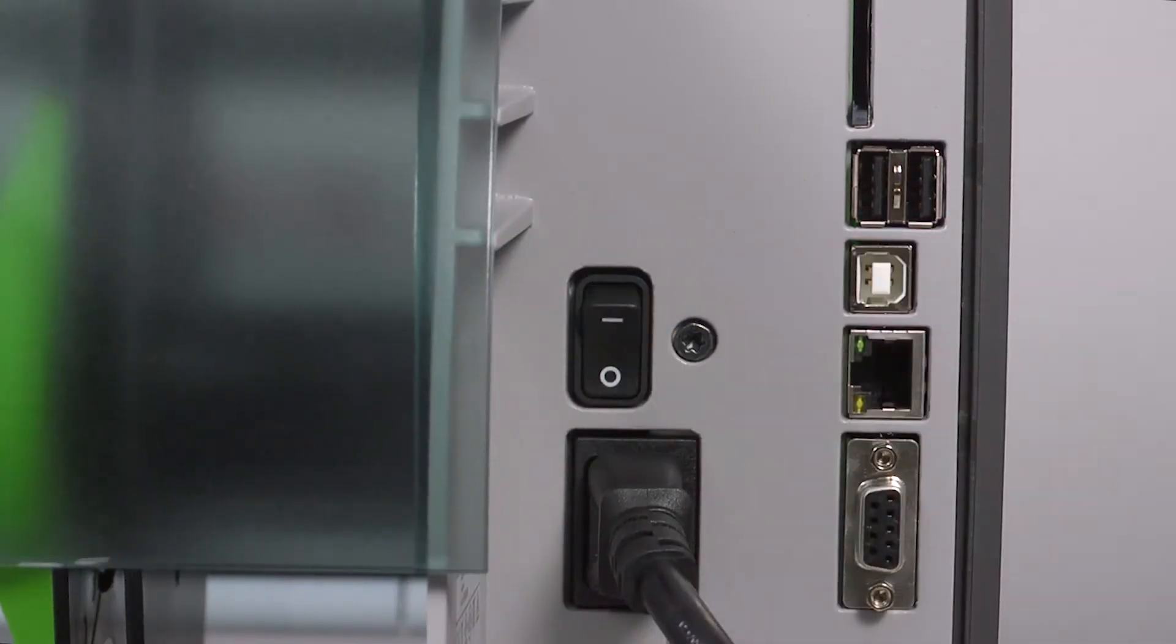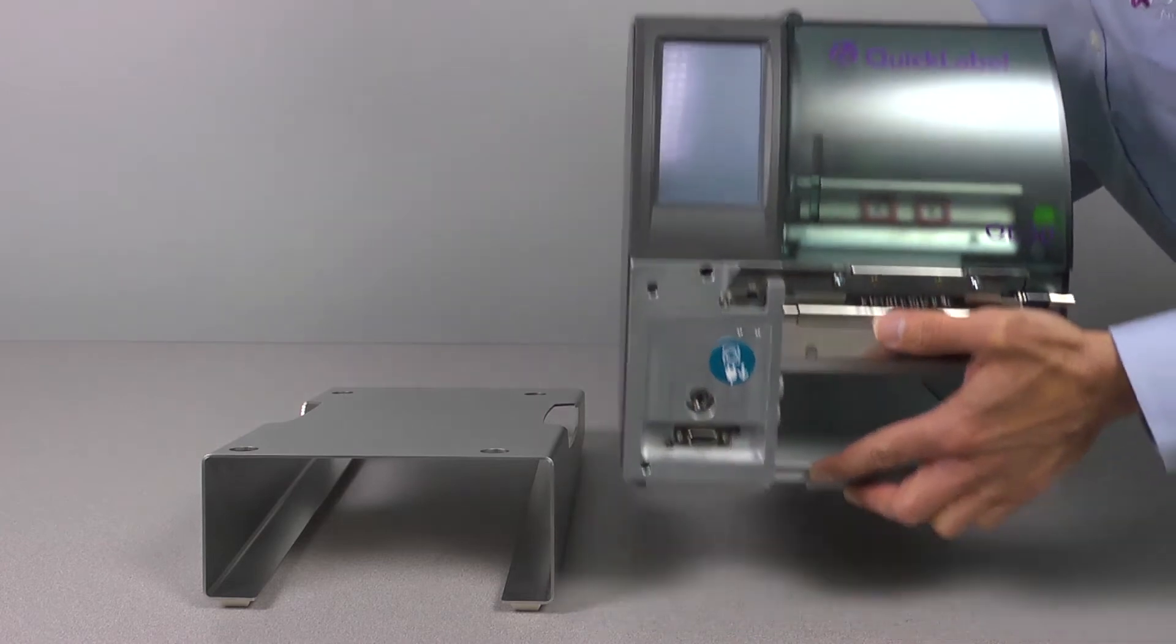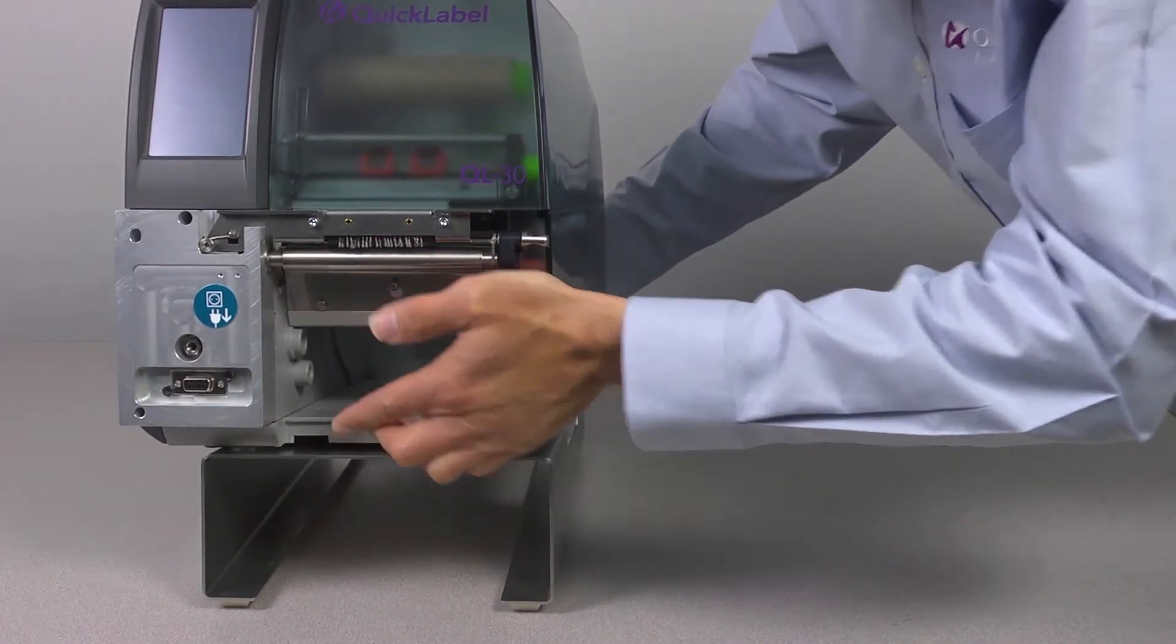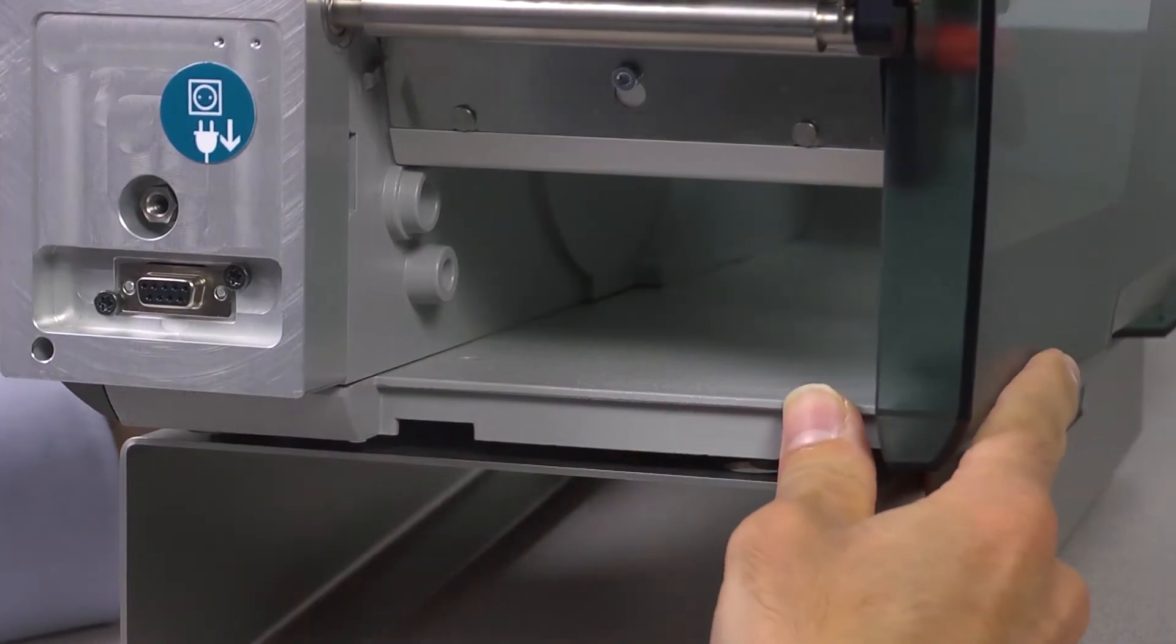Now power off the printer. Start by placing the base frame of the stacker on a flat surface. Place the printer on top of the base frame, making sure that the feet of the printer are placed in the holes of the base frame.